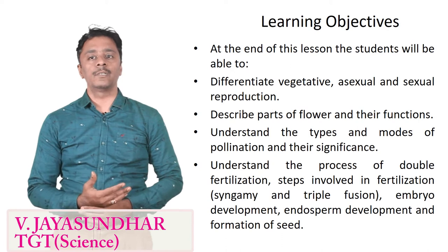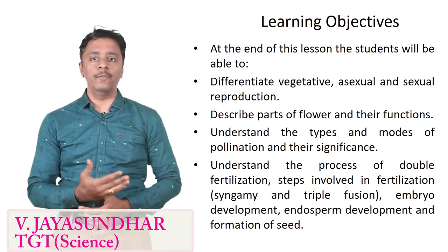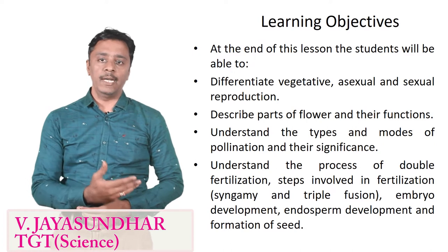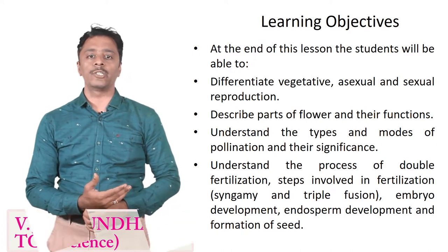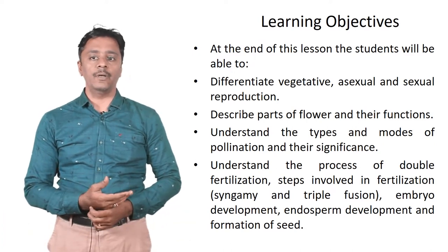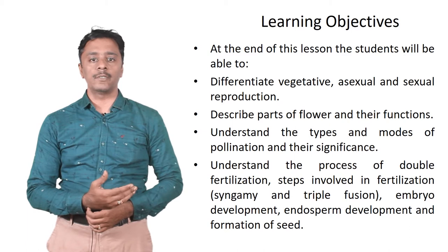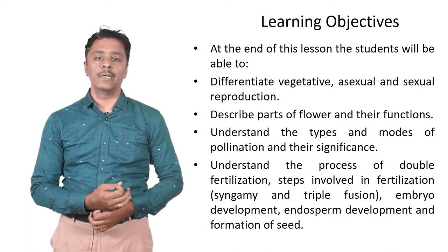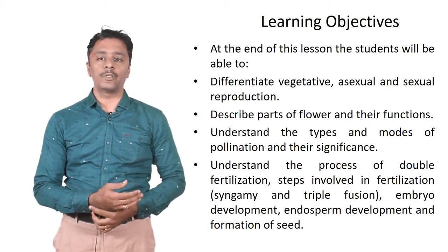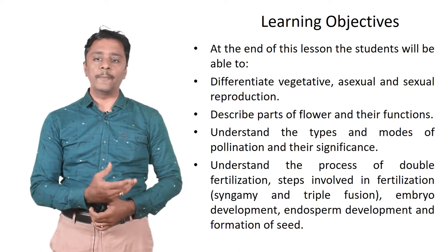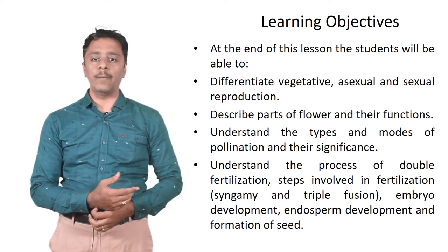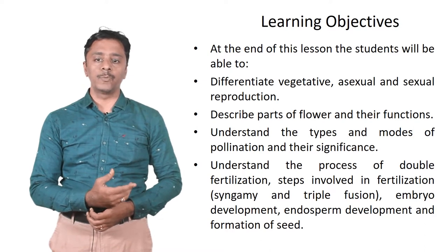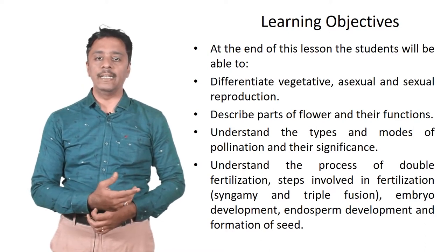The learning objectives in this lesson are: at the end of this lesson, the students will be able to differentiate vegetative, asexual and sexual reproduction; describe the parts of the flower and their functions; understand the types and modes of pollination and their significance; understand the process of double fertilization, steps involved in fertilization, syngamy and triple fusion, embryo development, endosperm development, and formation of seed.